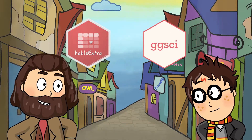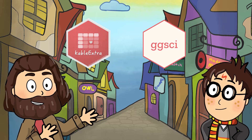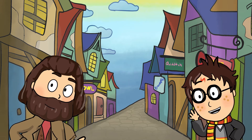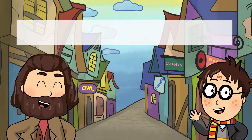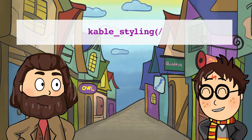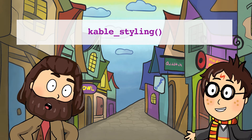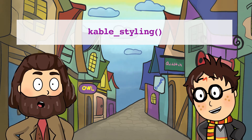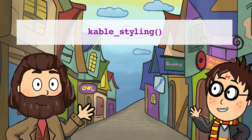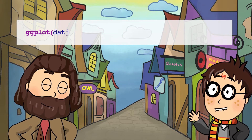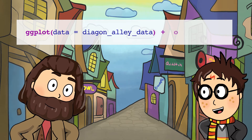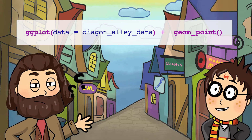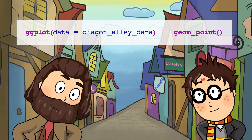Can we use kableExtra to visualize the data set, Harry? Totally! We can use the kable styling function to get a glimpse of the data table. Now let's begin by creating a plot using the ggplot function. Then we use the geom_point function to add points to the plot.